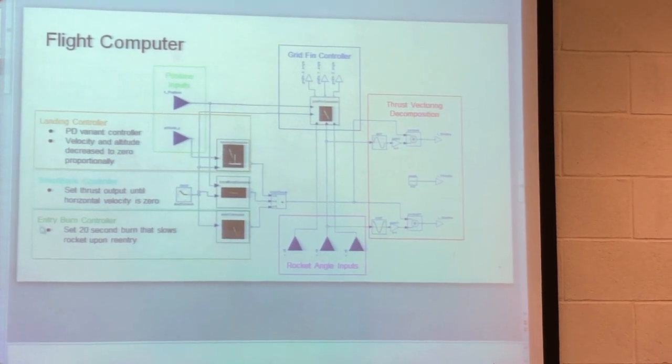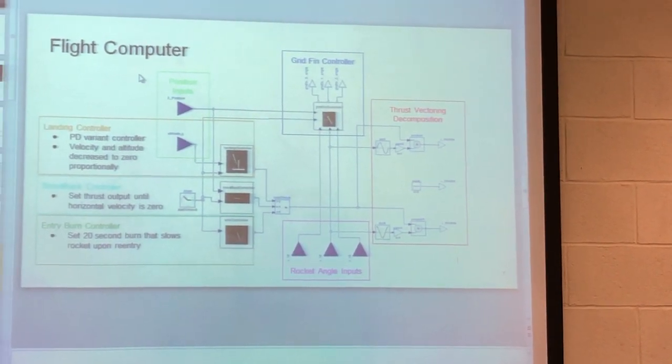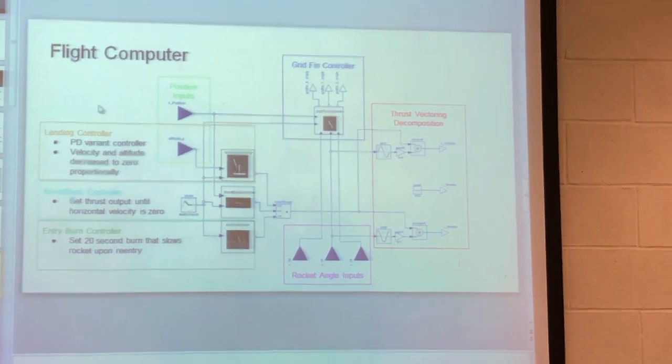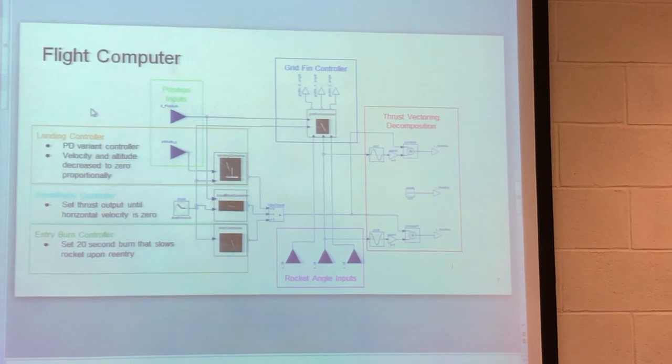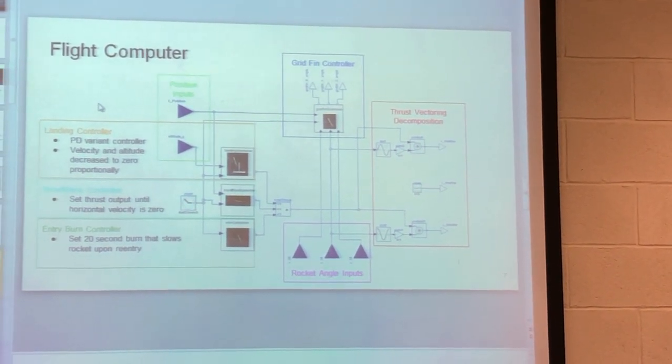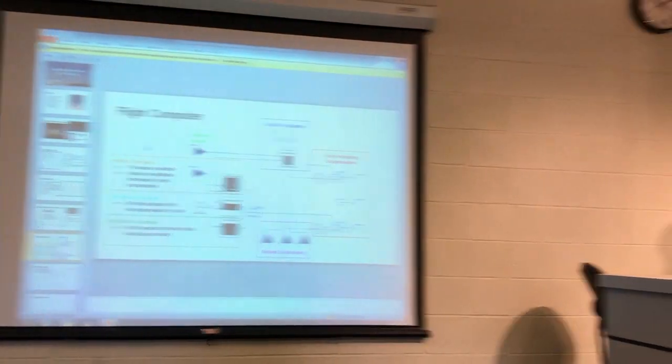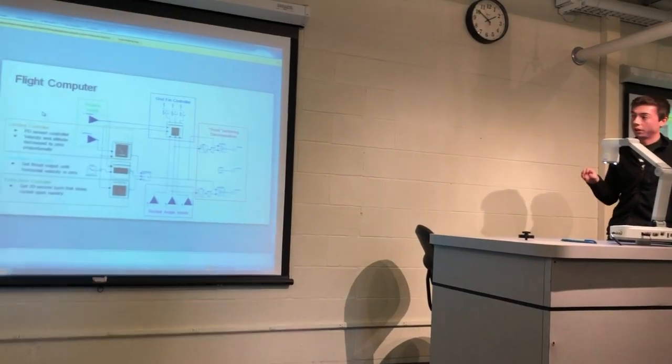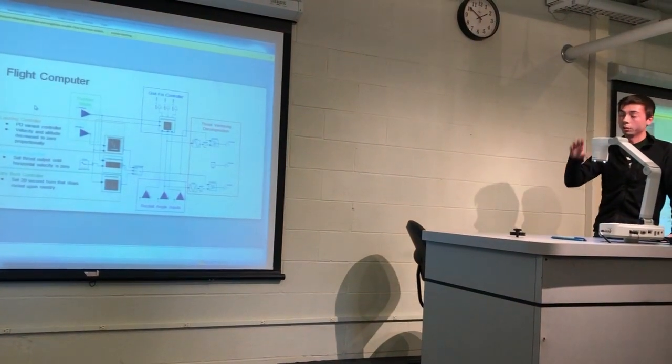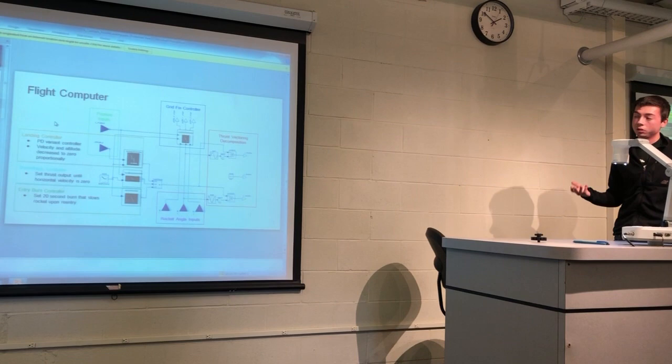And then at a certain point the entry burn controller takes over, and that's just a time burn at a certain altitude. And then there's this landing controller, that's kind of a fancy one going on here. It's a little different in that the velocity and the altitude kind of control so that they proportionally come down to zero together. If you think that at the very end, you want the velocity, the vertical velocity to equal zero, you want the altitude to equal zero. While a little bit above, like 100 meters up, you want the velocity to have a finite amount, and obviously the altitude to a finite amount.